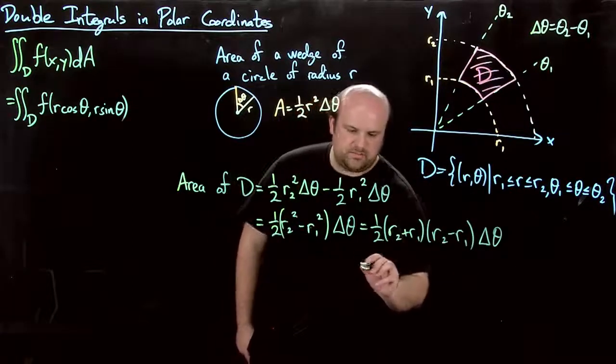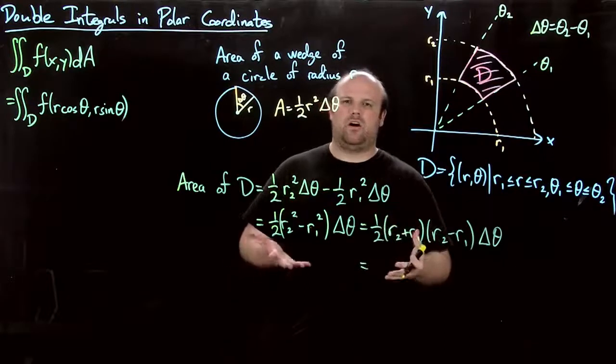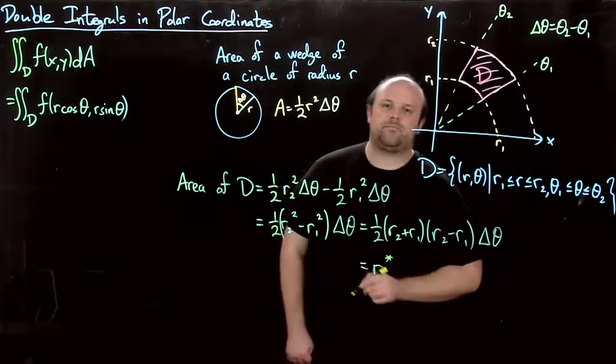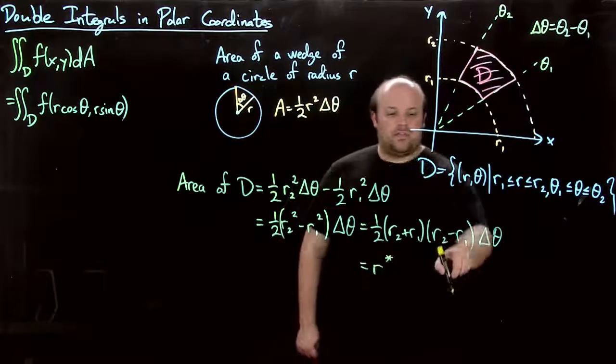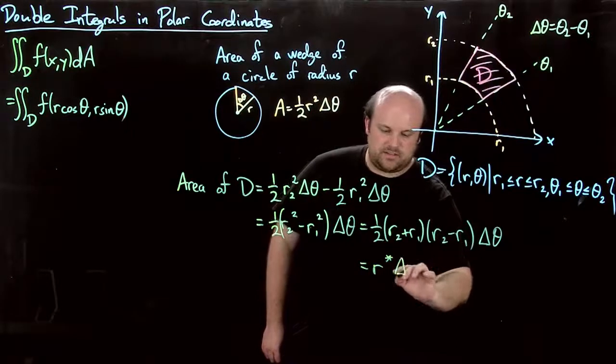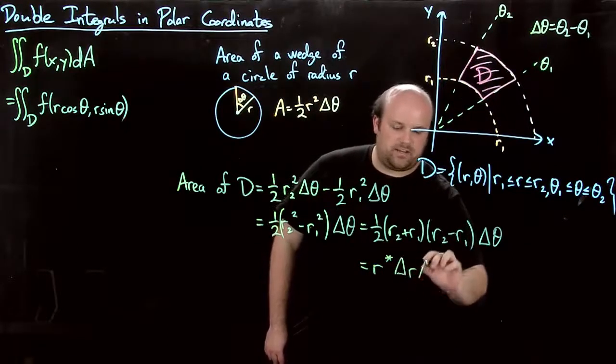Well, this one is kind of a midpoint r, so let's call that r star. This is the change in the radius from here to here. Let's call that delta r, and then we already have delta theta.